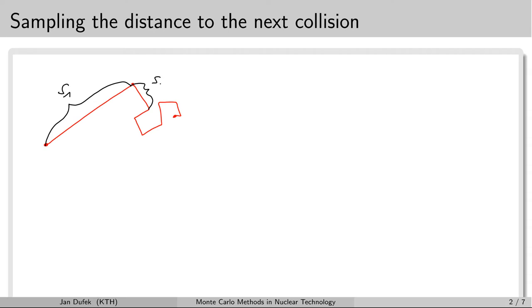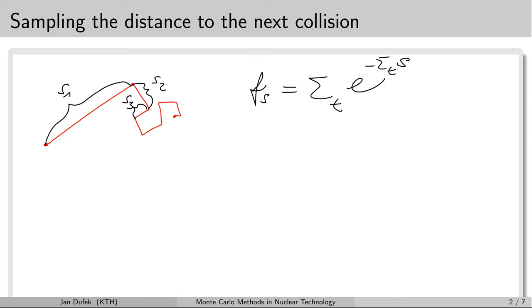Let's assume that the neutron is born in a fission reaction at some point and then it scatters. It may scatter until it is captured at another place or it may leak out of the system. We need to be able to sample the distances between the scattering collisions. These are continuous random variables. The probability density function for the distance between two collisions is given as the product of the total macroscopic cross-section and the exponential function with exponent minus sigma_T times s, where s is the distance between two subsequent collisions.